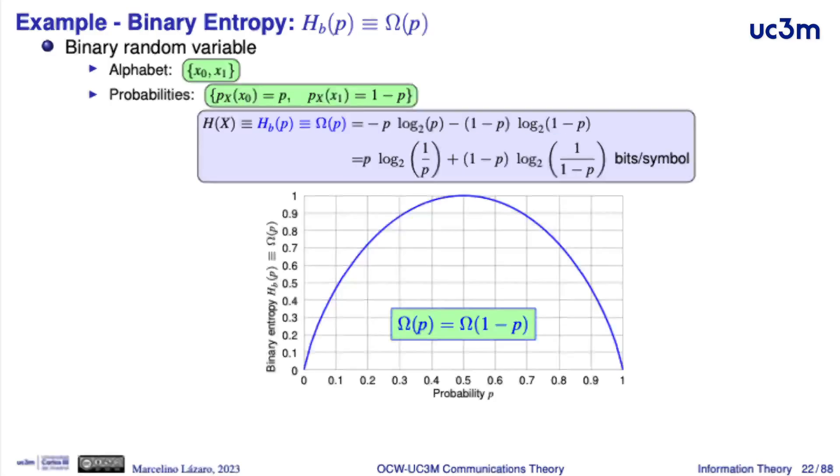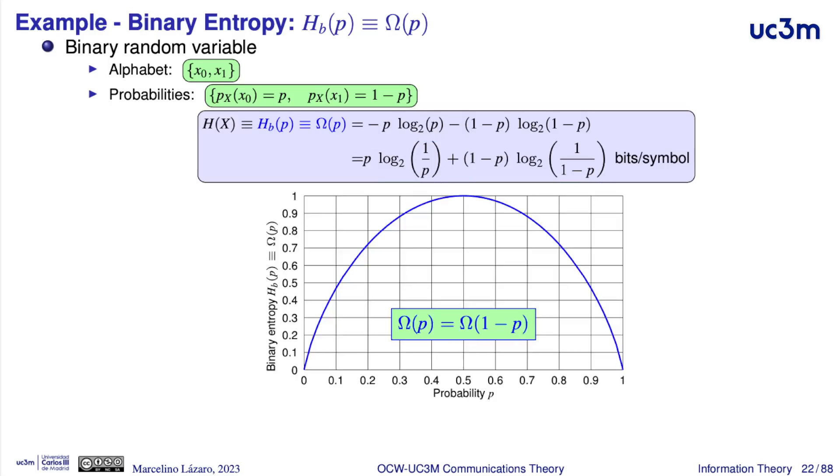If this function is plotted as a function of the argument p, we have the shape that we see in this picture. The Greek character omega is used because this shape is somewhat similar to this letter. And in some cases,